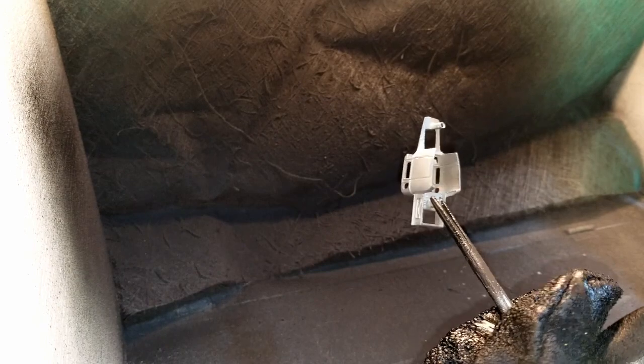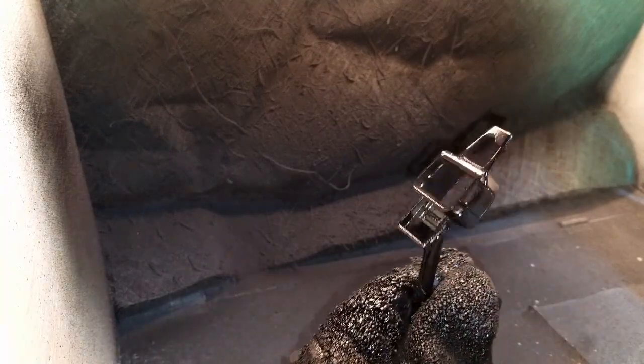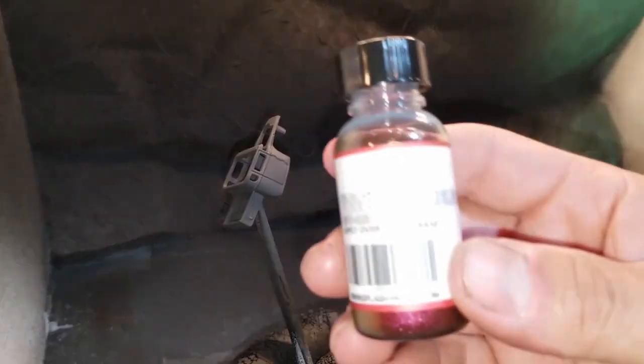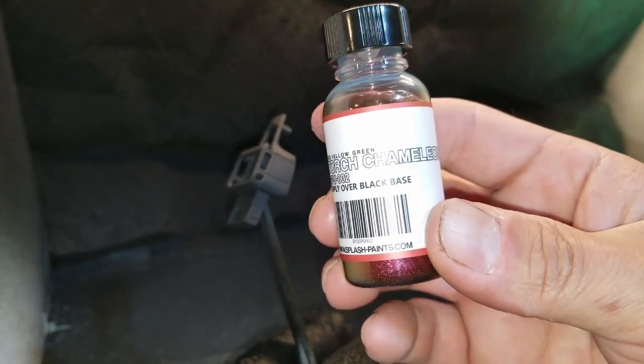I'm gonna hit it with some flat black. Had really good results with this rattle can primer. I do like how it does dry quickly and it does dry flat, so you can get a good look if there is any issues with the body after you get the primer on there - if anything needs fixed or sanded or filled or whatever. Here's a good look at our primed body. So I got some new Splash paints in the other day and I got this pretty cool color - it's called Torch Chameleon.